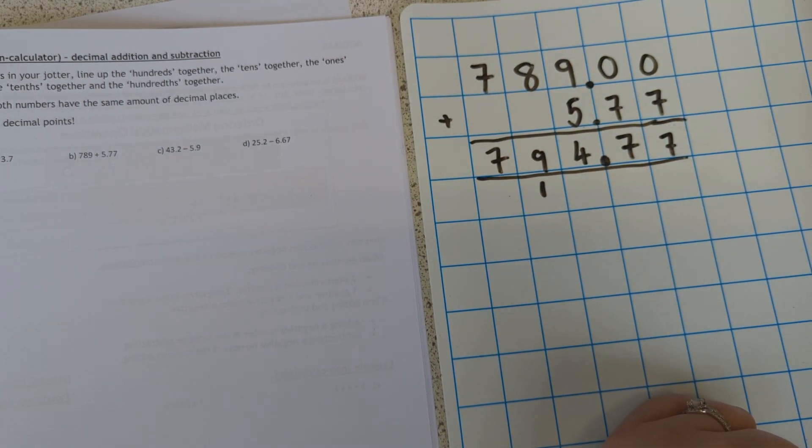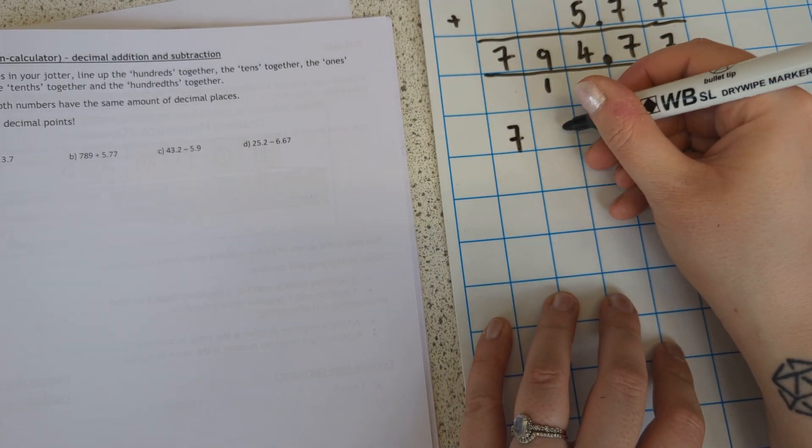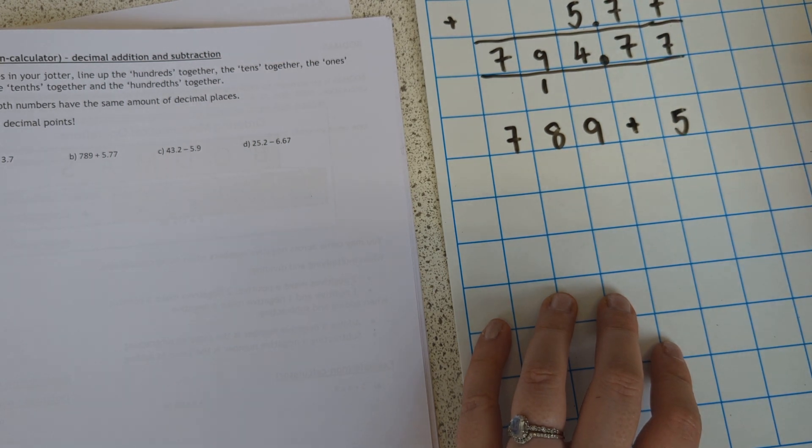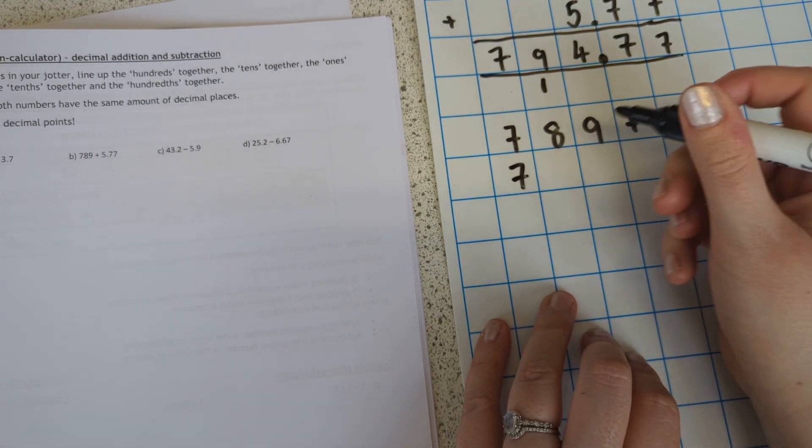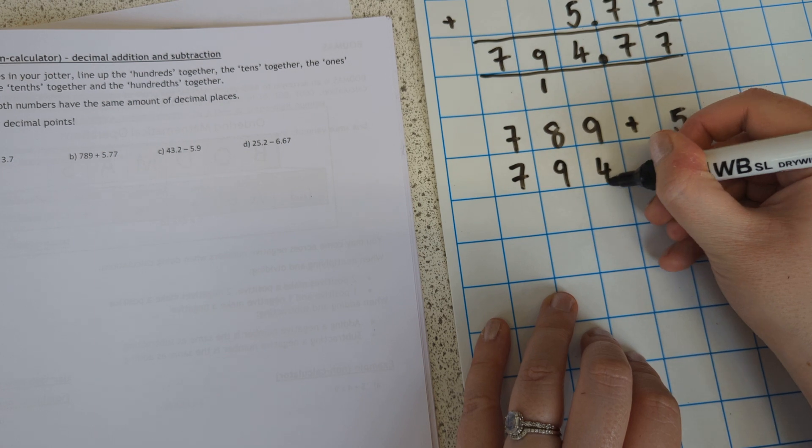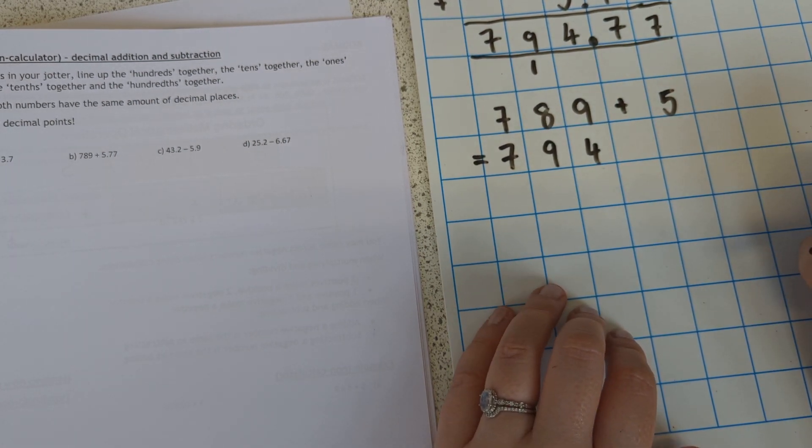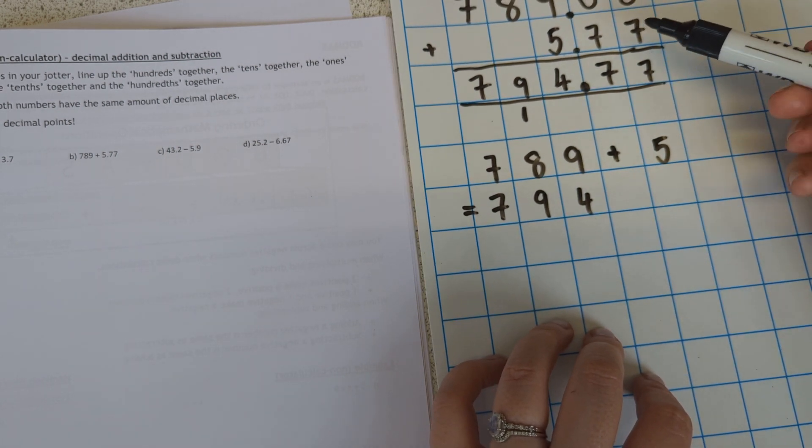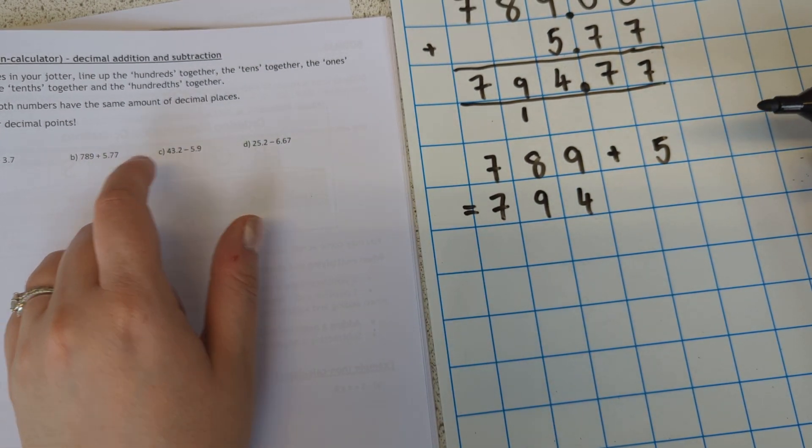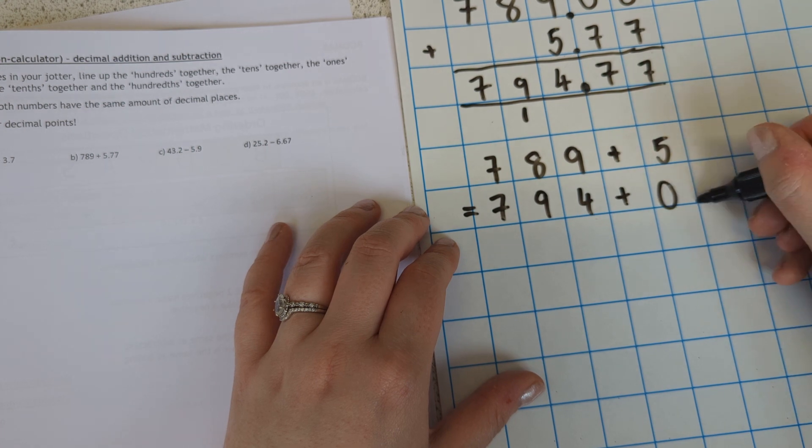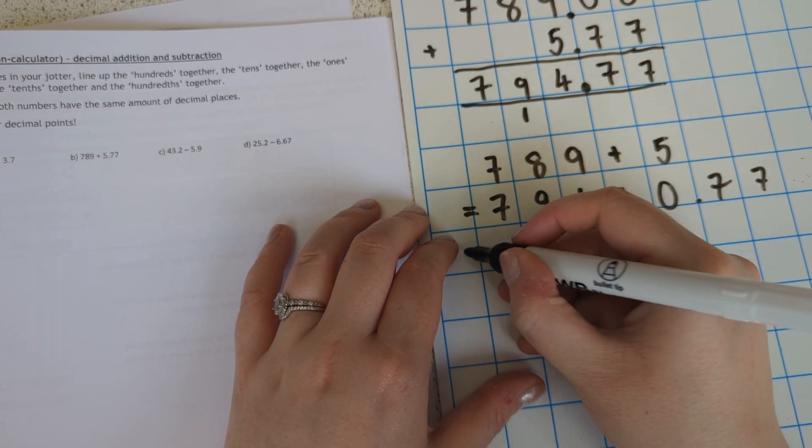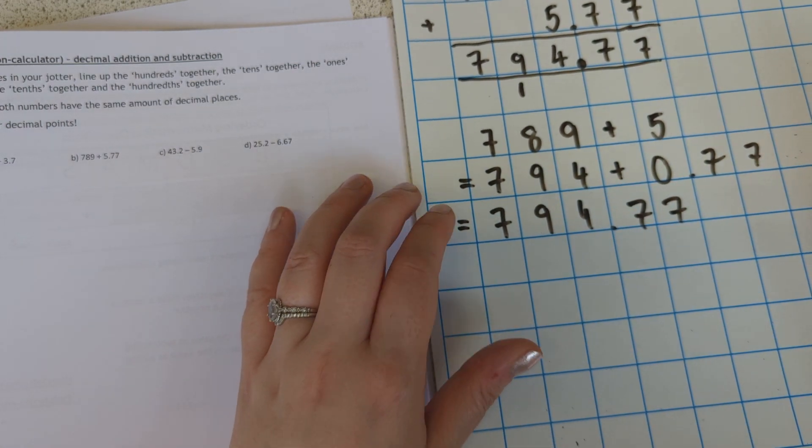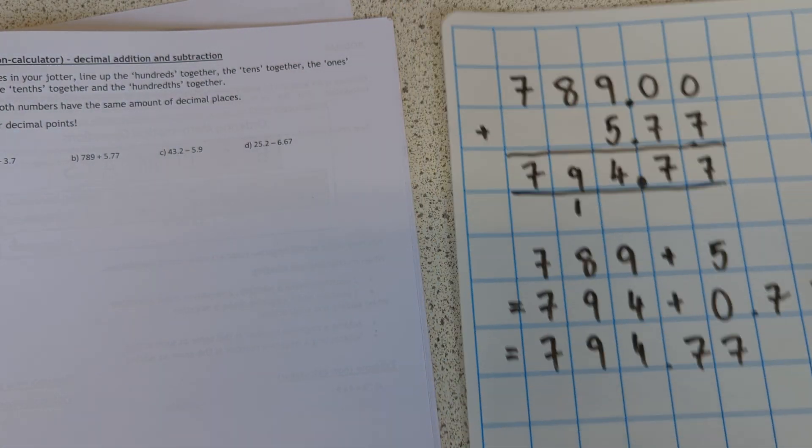Now, again, there's obviously other ways of doing this. You could just add the 5 on first, which is obviously just a relatively basic addition sum, which is 794. Then you've only added the 5, so you need to add the 0.77, which would obviously give you 794.77.